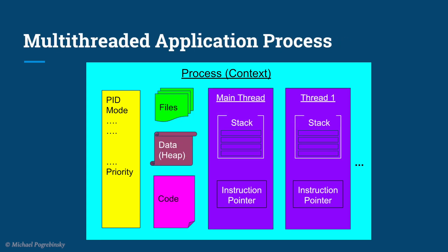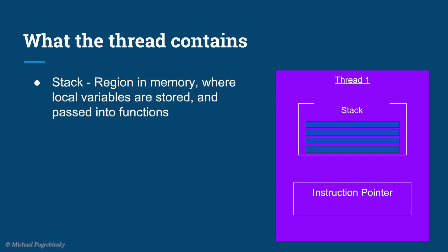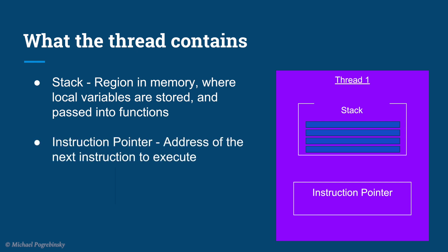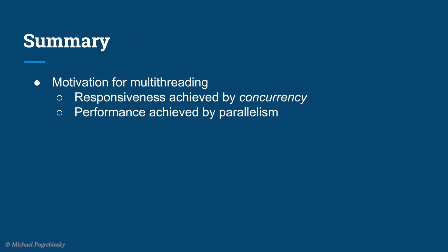Every process contains at least one thread called the main thread. A thread contains two main things: the stack and the instruction pointer. In a multi-threaded application, each thread has its own stack and its own instruction pointer, but all other components of the process are shared by all threads. The stack is a region in memory where local variables are stored and functions are executed. The instruction pointer is a pointer to the address of the next instruction the thread will execute.